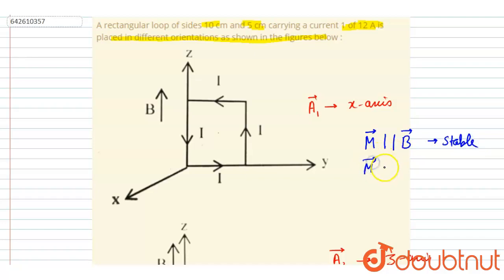And if they are anti-parallel, then it will be unstable equilibrium. Very simple.